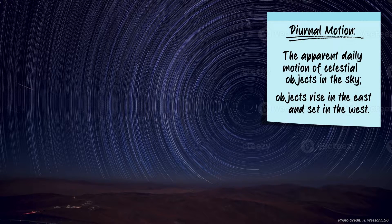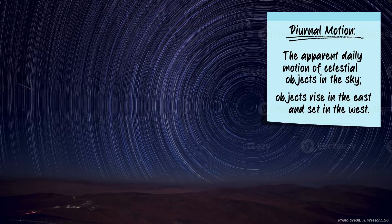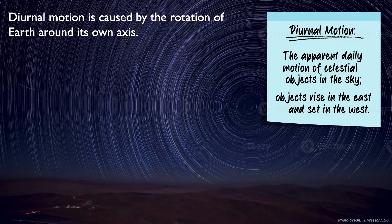Objects appear to rise in the east and set in the west. This type of motion is caused by the rotation of Earth around its own axis. The sky isn't technically moving. We are.